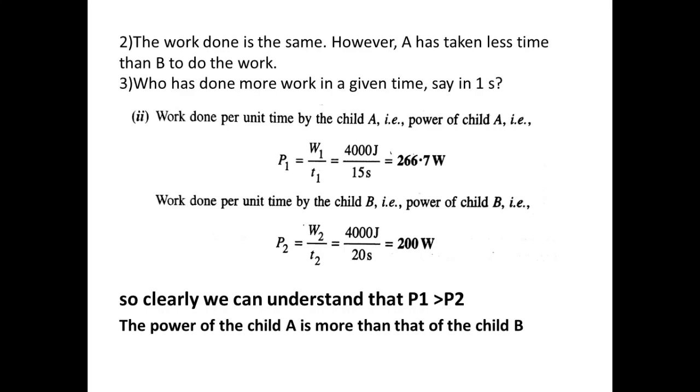Power equals W by T. For the first child, child A, P1 equals W1 by T1, which equals 4000 Joules by 15 seconds. We got 266.7 Watts. Work done per unit time by child B: P2 equals W2 by T2, so 4000 Joules by 20 seconds, which is 200 Watts. We can understand that P1 is greater than P2. The power of child A is more than the power of child B.